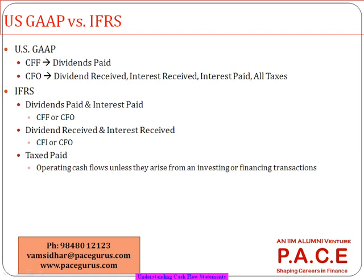There are some differences between US GAAP and IFRS regarding where interest and dividends are classified. Under US GAAP, except for dividend paid, all others go into cash flow from operations — dividend received, interest received, interest paid, and even taxes paid are all treated as cash flow from operations.